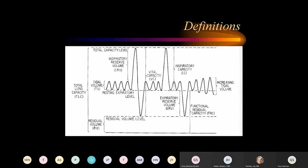This diagram shows what the lung volumes look like. We can see that all the air in the lungs represents total lung capacity. We have tidal volume — a normal breath — vital capacity, inspiratory capacity, expiratory reserve volume, and functional residual capacity. These are all the volumes we look at in lung function.